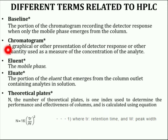The next term is chromatogram. A chromatogram is a graphical or other representation of detector response, or other quantity used as a measure of the concentration of the analyte. A chromatogram is essentially the output of a chromatography run — it is an electronic file or hard copy containing the information generated during the chromatography run.